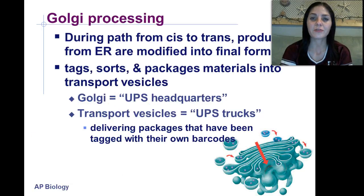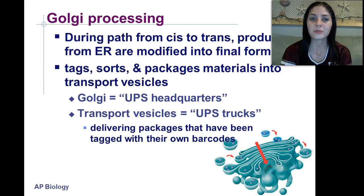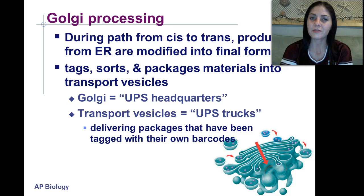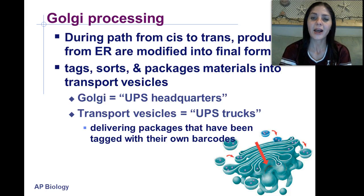During the path from the cis to the trans side, products from the endoplasmic reticulum are modified into their final form. The Golgi tags, sorts, and packages the materials into transport vesicles. The Golgi itself is kind of like UPS headquarters, and the transport vesicles are like the UPS trucks — delivering packages tagged with their own barcodes.